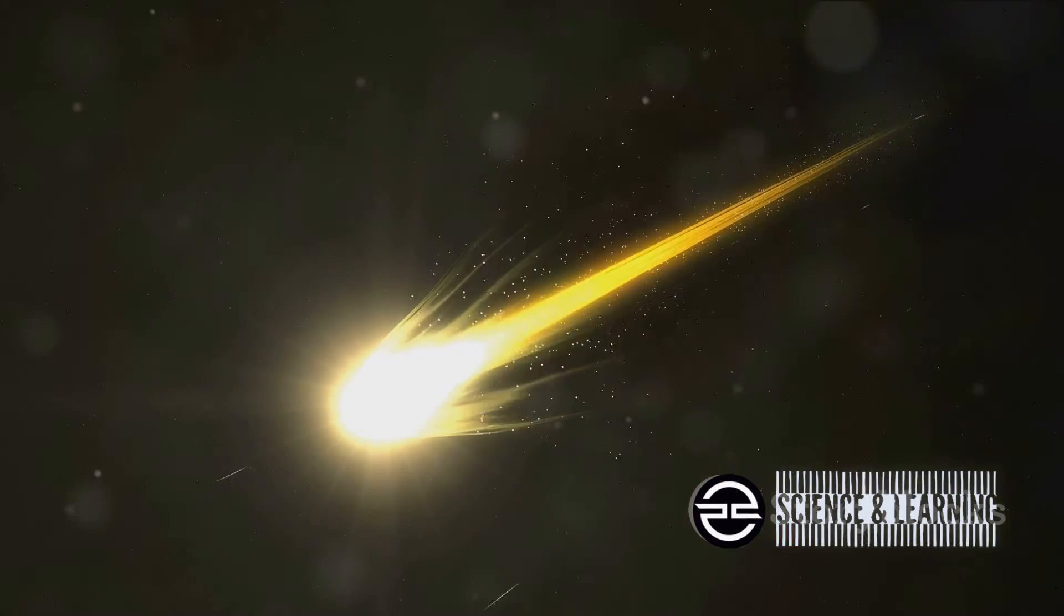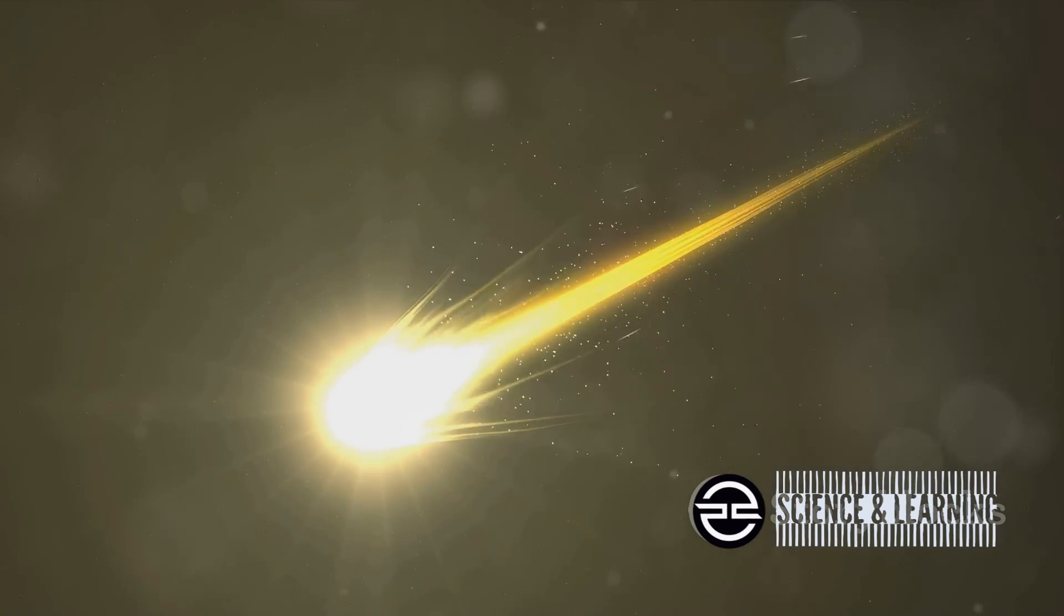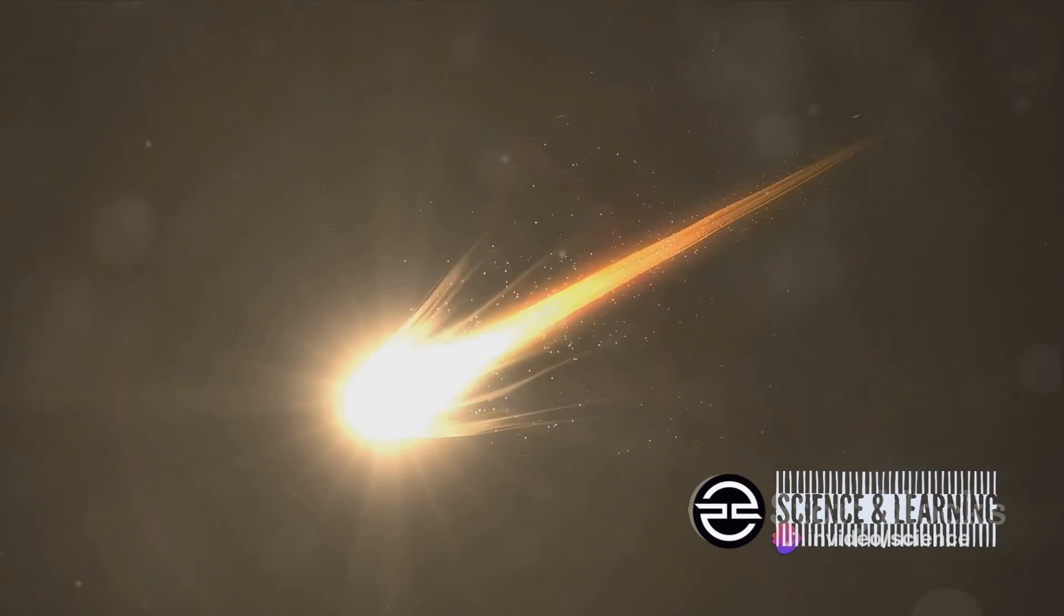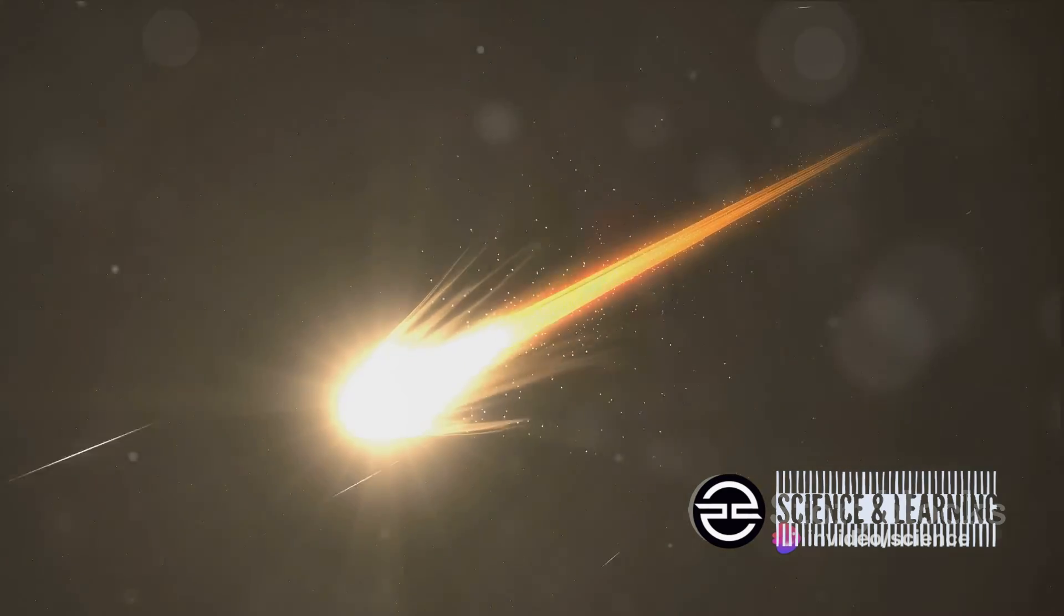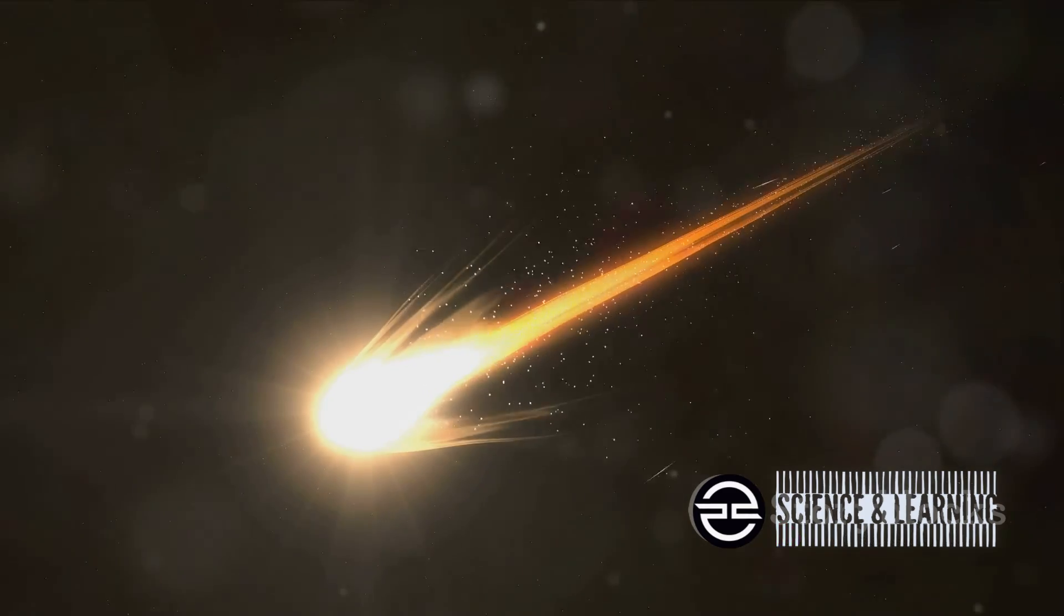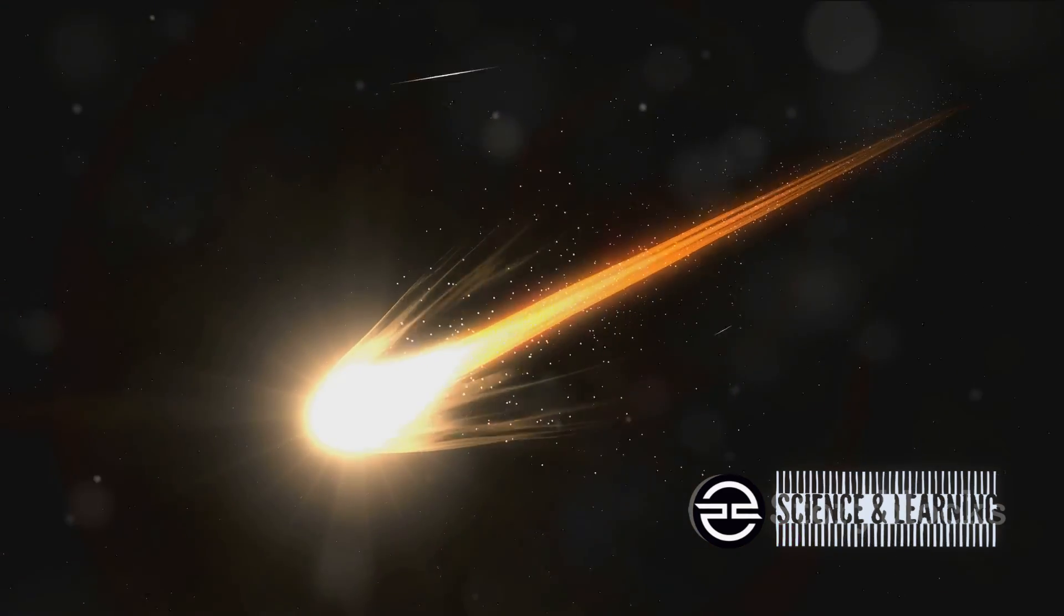So how and when can you see this spectacle? The best time to catch a glimpse is during its perihelion, the point in its orbit when it's closest to the sun. As the sun's rays hit the comet, they heat up the ices, causing them to vaporize and create a glowing coma around the comet. This is what makes the comet visible from Earth.